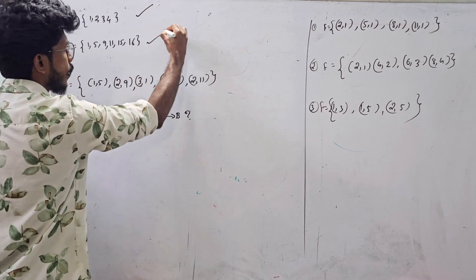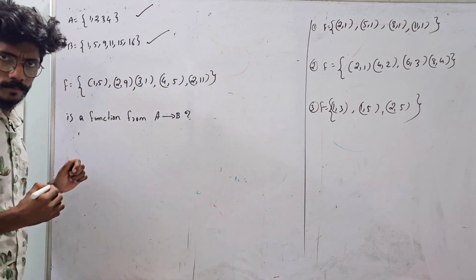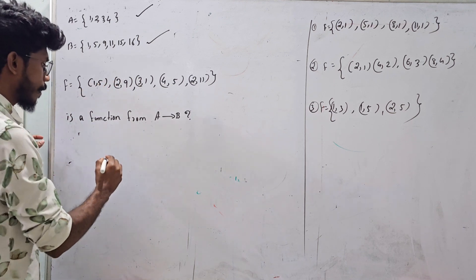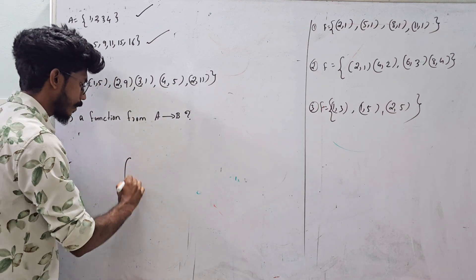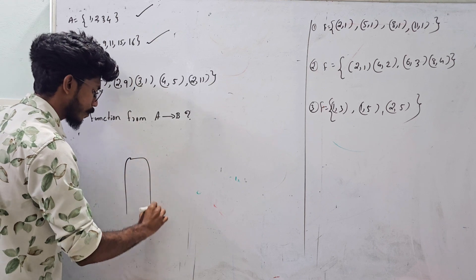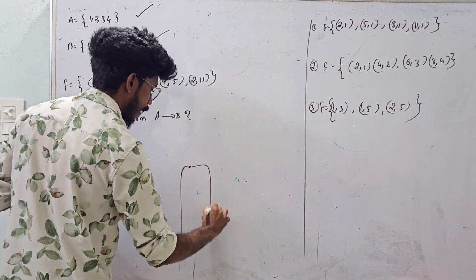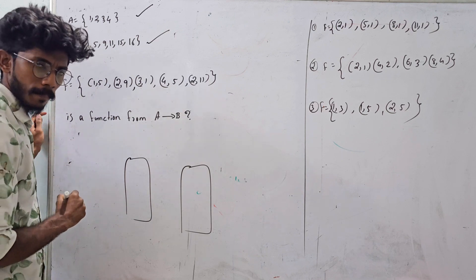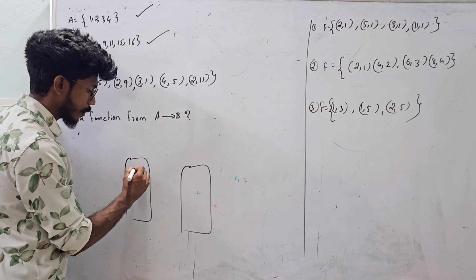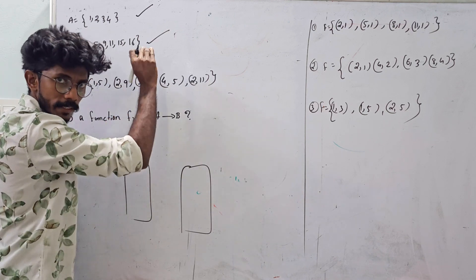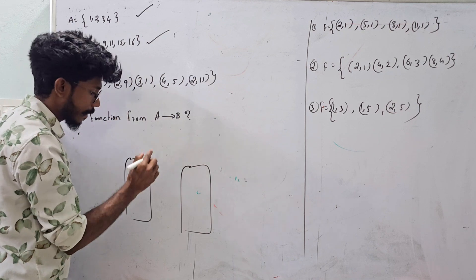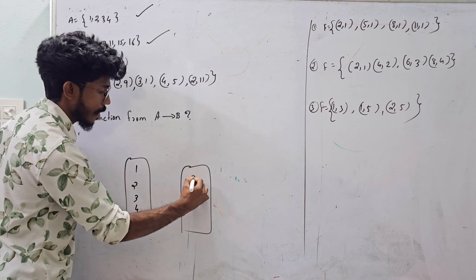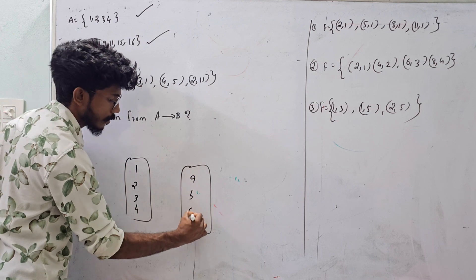A is a set and B is a set. I will define a function. I will go to the diagram of the problem. I will tell you the function. Now, let's take an example: 1, 2, 3, 4 — this is A — and B, C, D on the other side.